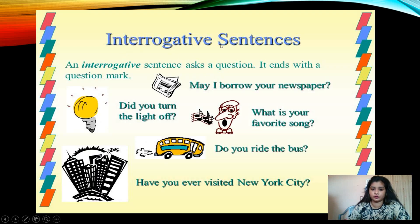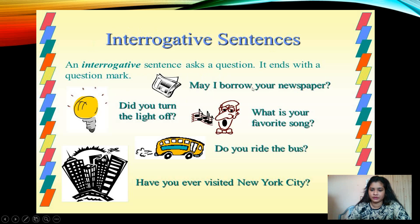The simplest one — interrogative sentences. Children, what is an interrogative sentence? It's a question. An interrogative sentence asks a question and ends with a question mark. Examples: 'May I borrow your newspaper?' 'Did you turn the light off?' 'What is your favorite show?' 'Do you ride the bus?' 'Have you ever visited New York City?' Whenever you see a question mark, it means it is an interrogative sentence.